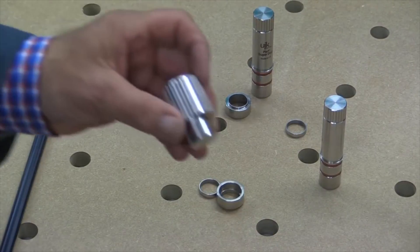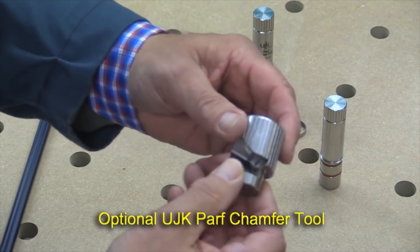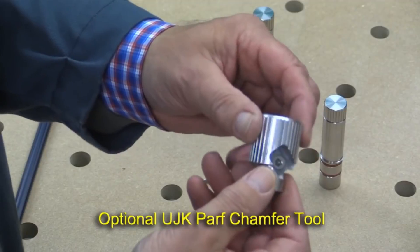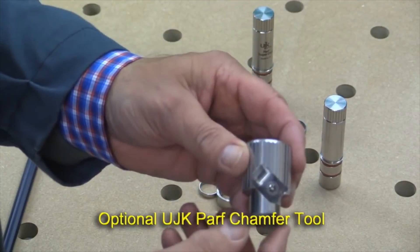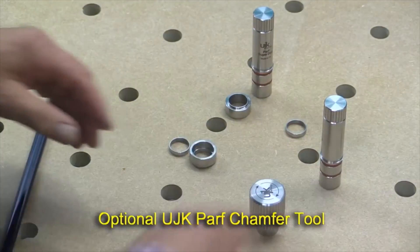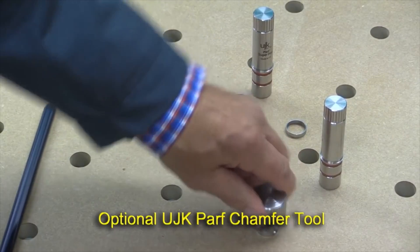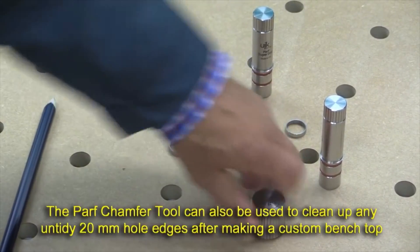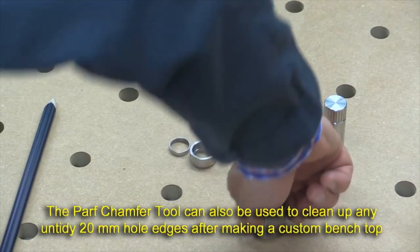Well that's where this optional tool comes in and it's optional because some people would prefer to make their chamfer using their router. Now this again like all of the Parf products from Axminster is a really nice fit and all you do is you insert the chamfer tool in your bench through the hole